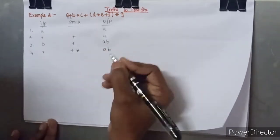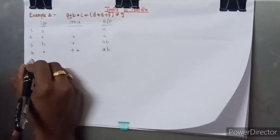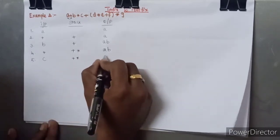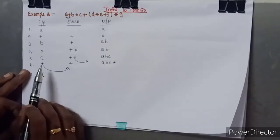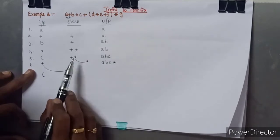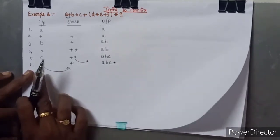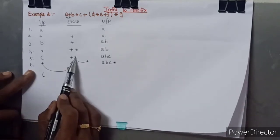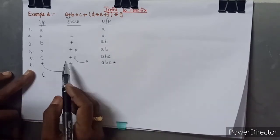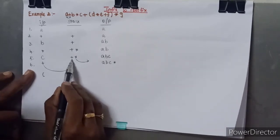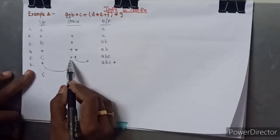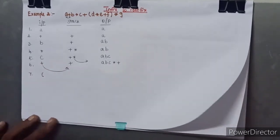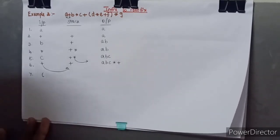The next character is C, an operand, so it is placed onto the output. The next character is plus, which has lower precedence than the star on top of the stack. A lower-precedence operator must not be pushed above a higher-precedence one, so we pop the star and place it on the output. We then compare the incoming plus with the next stack symbol, also plus — equal precedence, so that is popped too. Finally, the new plus is pushed onto the stack. The output is now A B C star plus.